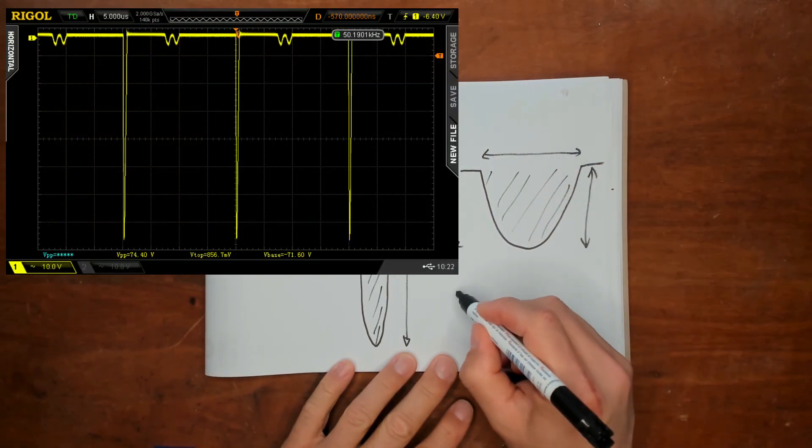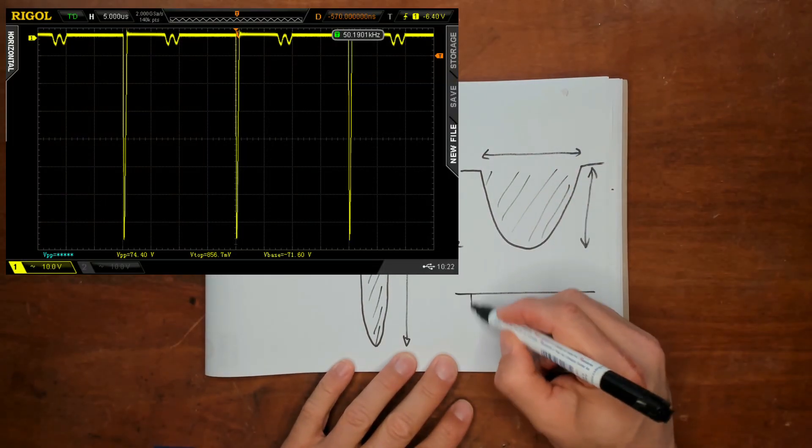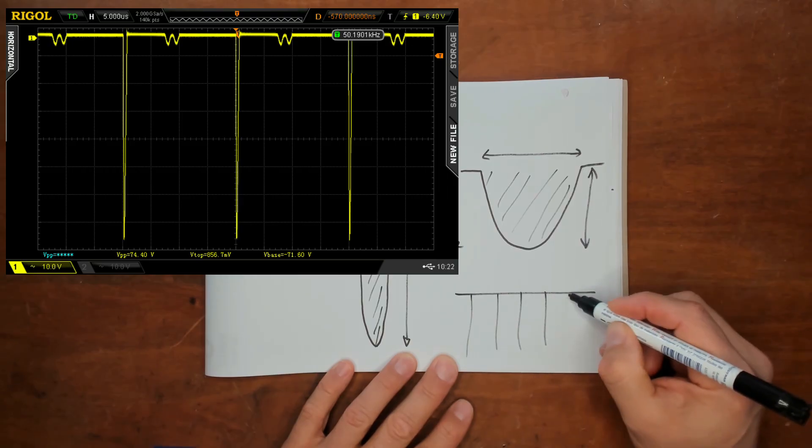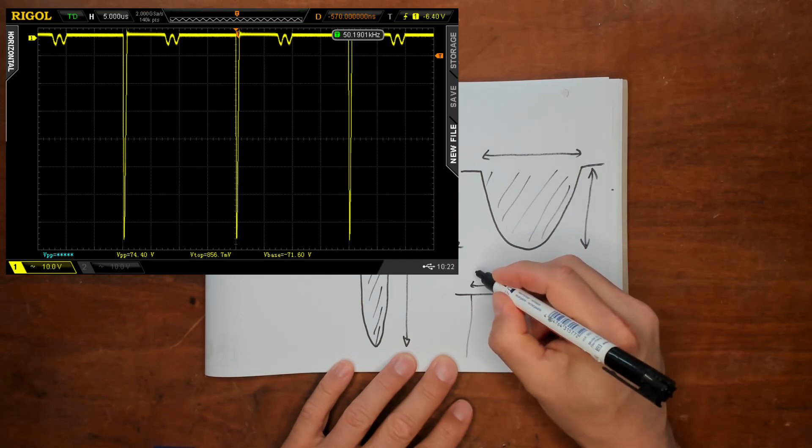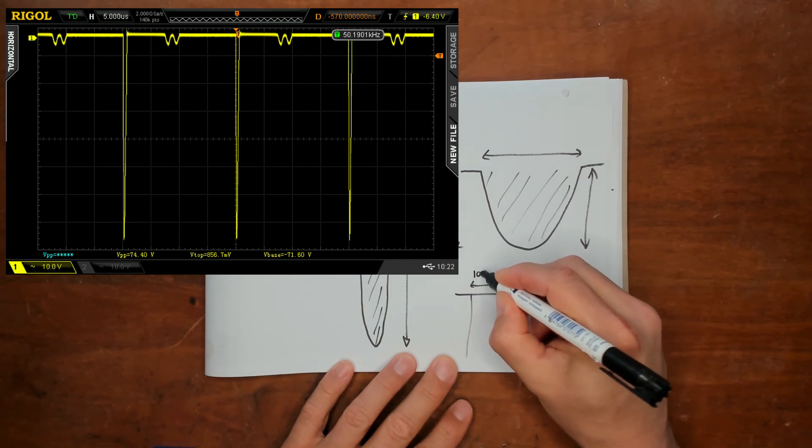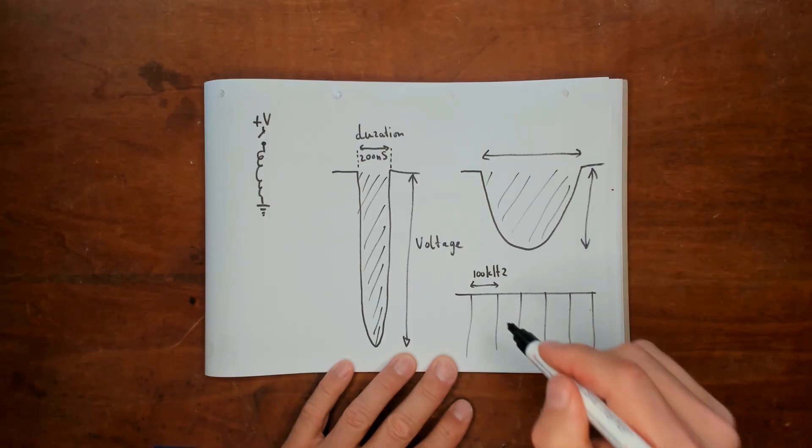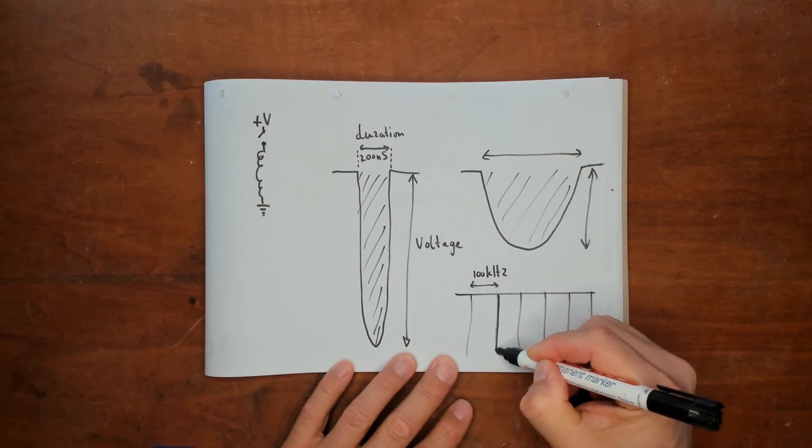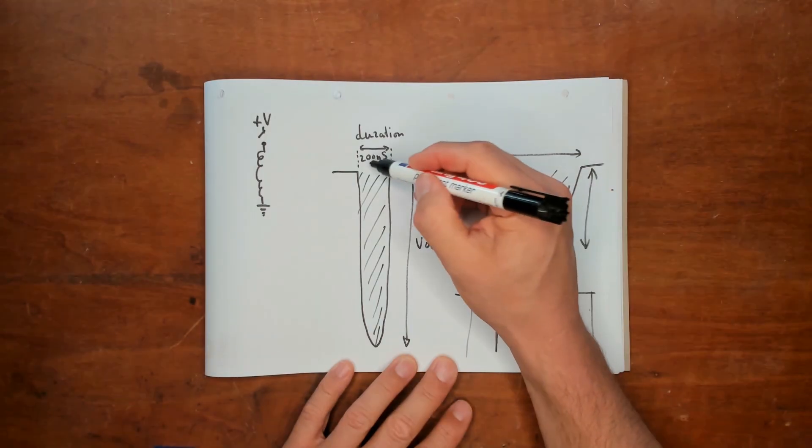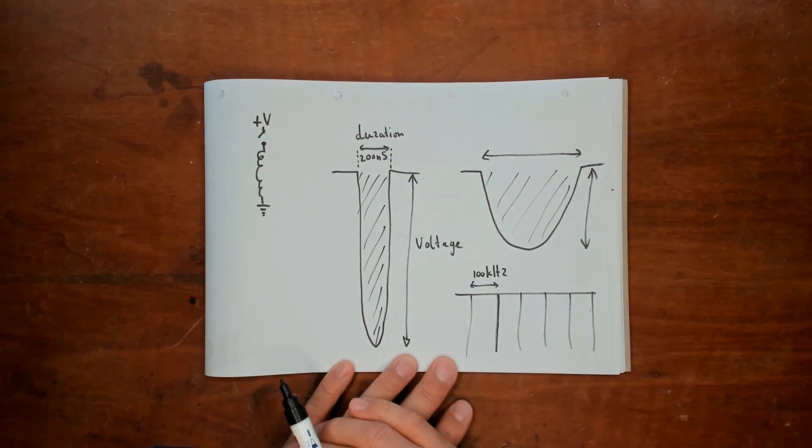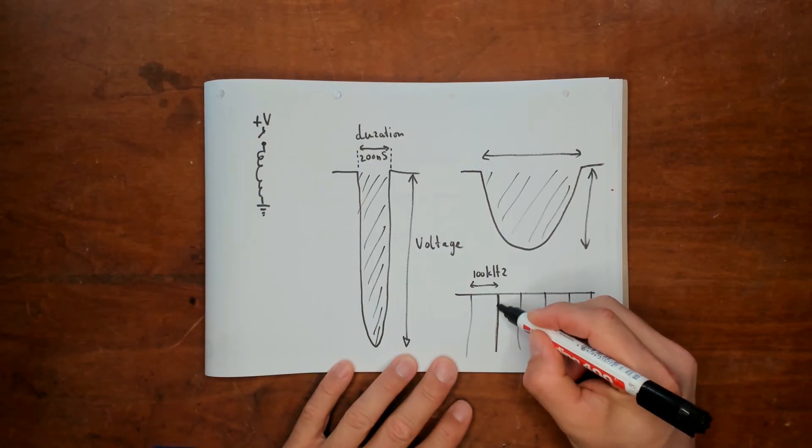So on a scope you would look at it like this. They would be single impulses. The distance between the impulses determines the frequency, so let's say 100 kilohertz. And if you zoom in to one of those impulses you can see the duration of the impulse which is like 200 nanoseconds. So it really is a spike.